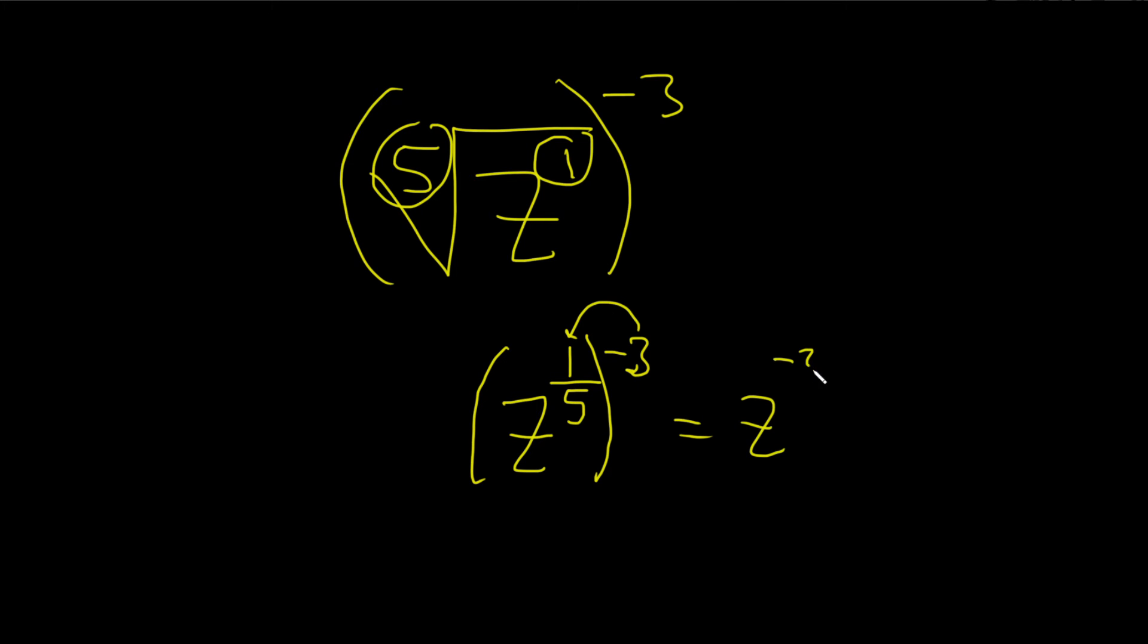That's properties of exponents, by the way. Whenever you have an exponent to an exponent like this, you just multiply.